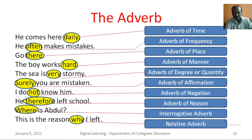The Adverb. An adverb is a word used to add something to the meaning of a verb, an adjective or another adverb. He comes here daily — here, daily is an adverb of time. He often makes mistakes — here, often is an adverb of frequency. Go there — here, there is an adverb of place. The boy works hard — here, hard is an adverb of manner.